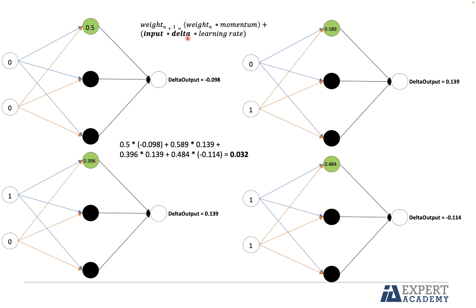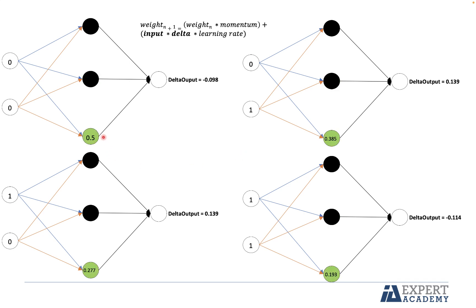Now we move on to the second neuron of the hidden layer. We apply input times delta using the activation value and delta outputs, and the result is 0.022. Finally, we move on to the third neuron of the hidden layer and apply the same equation. The result is 0.021. If you want to see the values in detail, I encourage you to pause the video and check them.